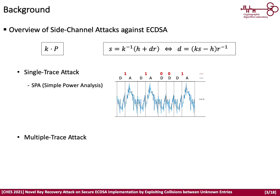To counteract SPA, scalar multiplication can be implemented using regular operations like the double-and-add-always algorithm or unified point addition. However, advanced single-trace attacks — collision attacks — can recover secrets even when protected by such countermeasures. There are several collision attacks; here I will introduce only HCCA and ROGETA. Scalar multiplication has two core operations: point doubling and point addition.